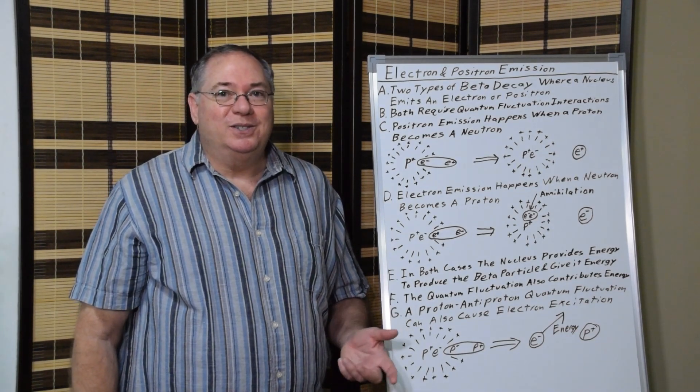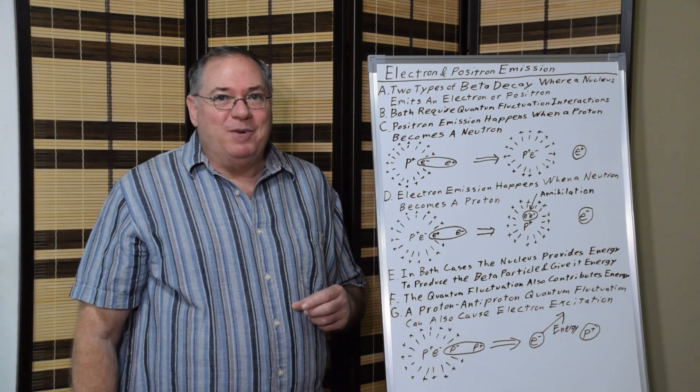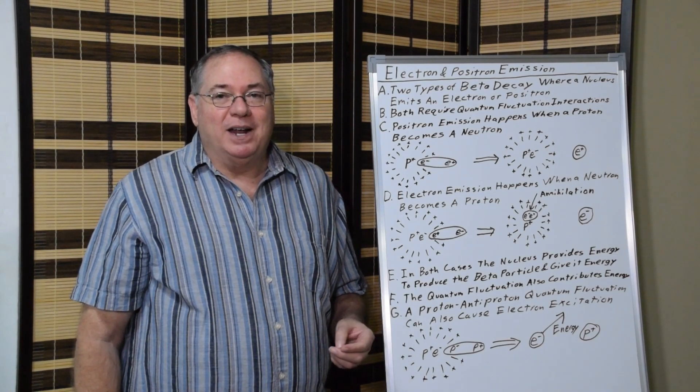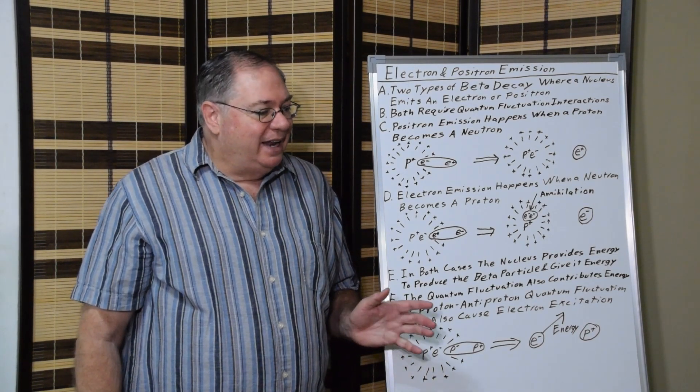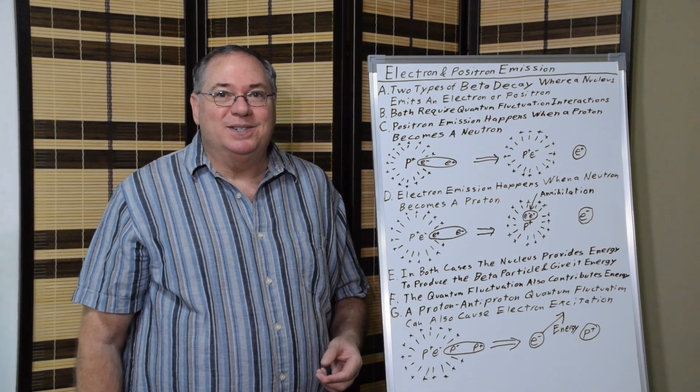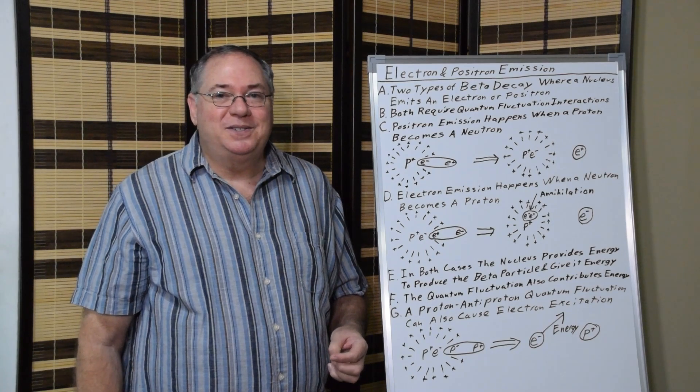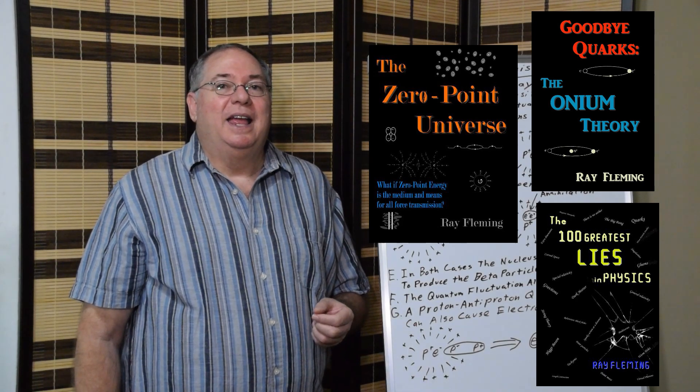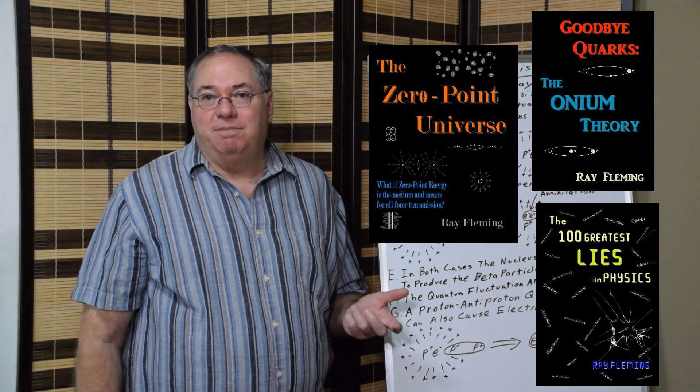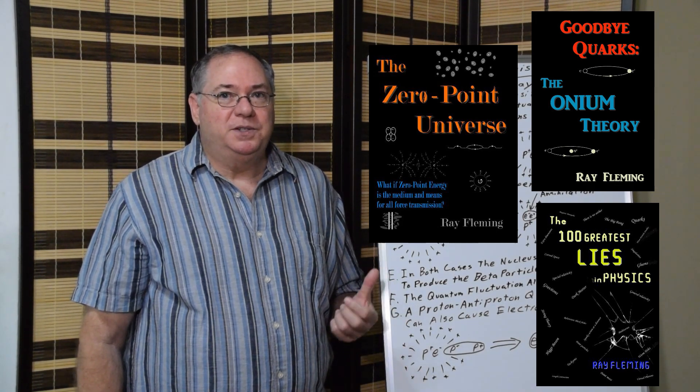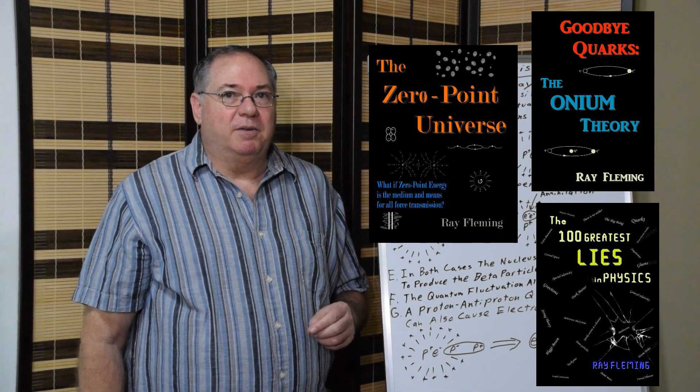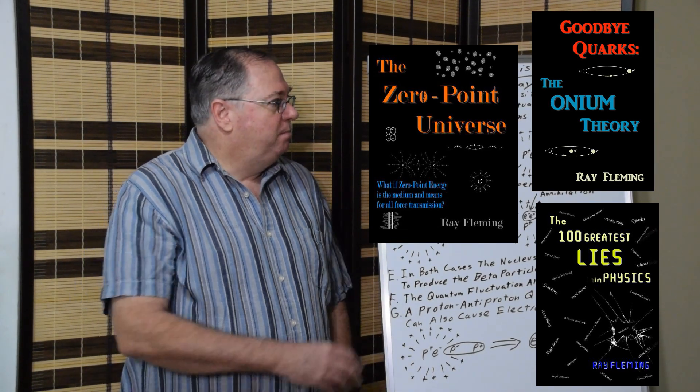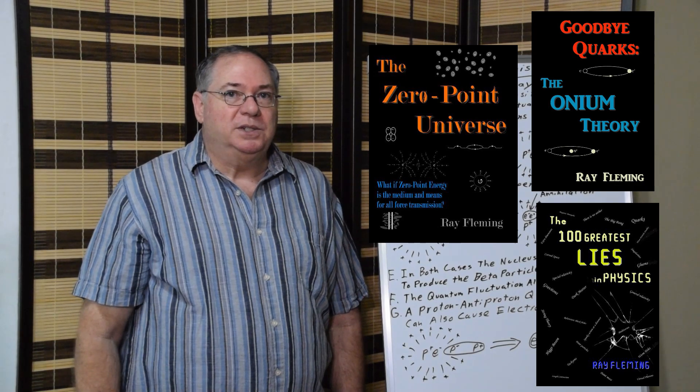I hope you enjoyed this video and learned something about weak interactions involving electrons and positrons and how that relates to radioactive decay. If you do, please like, share it with your physicist friends, subscribe to see more of my videos. I also have books for sale on quantum field theory and particle theory. If you want to learn more about this series, you can find it in my books. In particular, The Zero Point Universe describes this in greater detail. But my book, Goodbye Quarks, The Alternative Theory, describes the particle structure in much more detail.